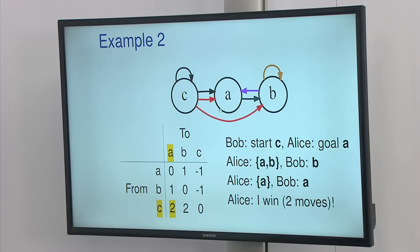and her optimal choice is to choose red, which will force Bob to go to A or B. Bob is trying to avoid A, so he chooses B. And then from B, Alice can choose the set that forces him to go to A, which is the purple arrow. And then Bob must move to A, and then Alice wins in two moves.